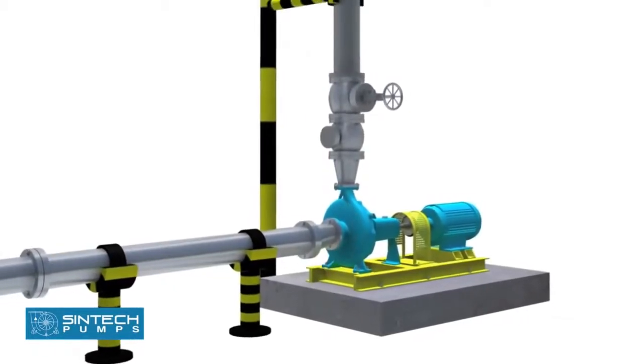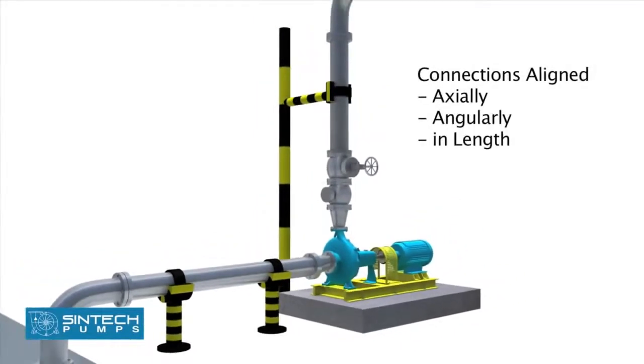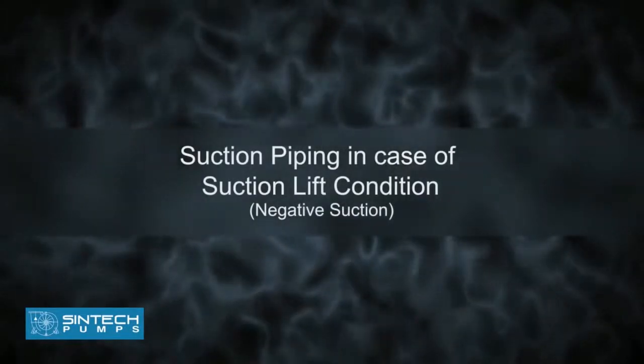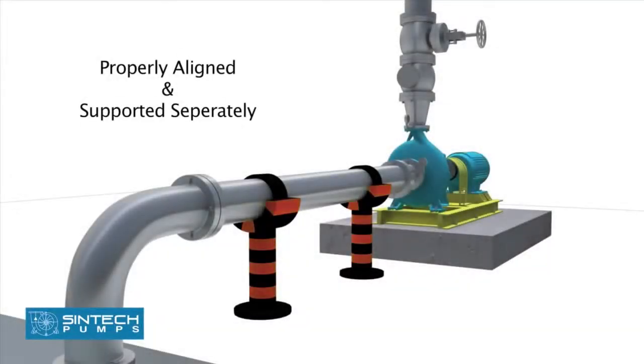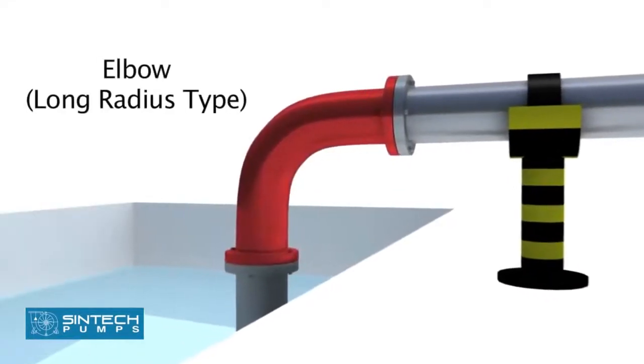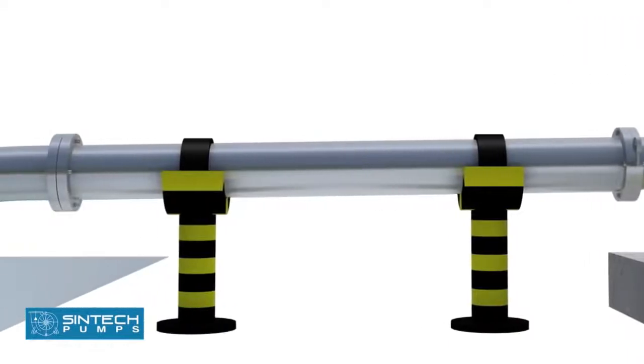It is important that the connections be carefully aligned axially, angularly, and in length. Suction piping in case of suction lift condition, negative suction: the piping drum and the connection fittings should be properly aligned and supported separately. The elbow should be of long radius type. All suction piping must be airtight.